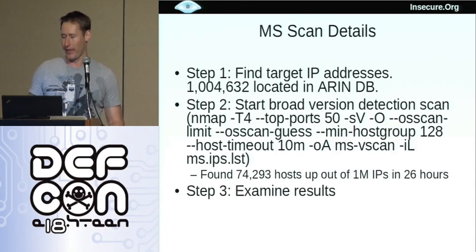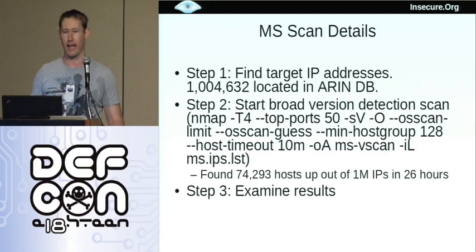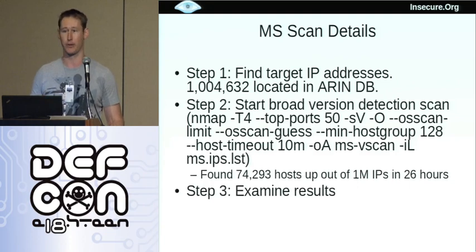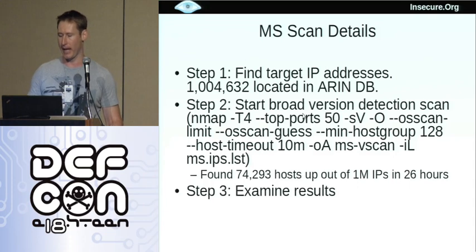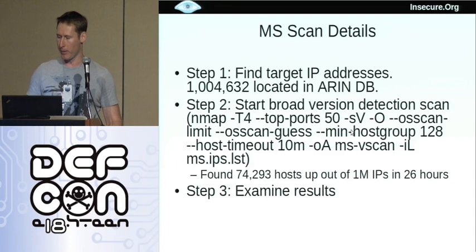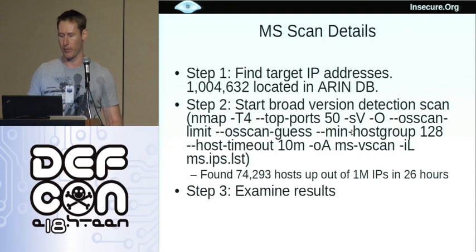I started with a broad version detection scan. Basically this scan, I didn't want it to be super intrusive and detailed for the first scan. I kind of wanted to have an idea of what was there, and then I could scan further once I've seen the initial results. That gives me faster results and makes it less likely to raise a lot of eyebrows. So we say Nmap, do aggressive timing, scan what we've empirically found to be the 50 most likely ports to be open, do version detection, OS detection, do a minimum host group size of 128 which makes it faster because it scans more in parallel.